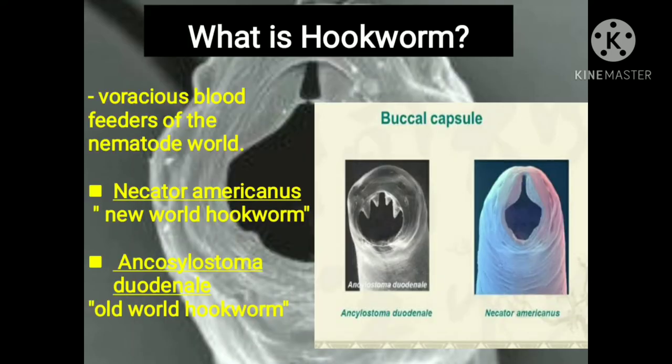Necator americanus is a gastrointestinal parasite in humans. They are hematophagous hookworms, which means they are the blood feeders of the nematode world. As the name suggests, they have hooks in their mouth that help them attach better to the intestines of their hosts. We have two kinds of hookworms: Necator americanus as the New World hookworm, and Ancylostoma duodenale as the Old World hookworm, but we're going to focus on Necator americanus only.